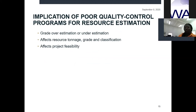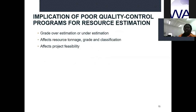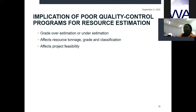There are serious implications of poor quality control programs for resource estimation. Poor quality control may lead to grade over-estimation or grade under-estimation. It affects the resource tonnage, grade, and classification, and also affects project feasibility. Poor quality control practices mean you may even overlook or walk over high-grade deposits because your controls are wrong — when results should report high grade, you end up reporting low grade and discard those projects instead of pursuing them. So good quality control programs are very important to ensure we do not miss significant deposits.